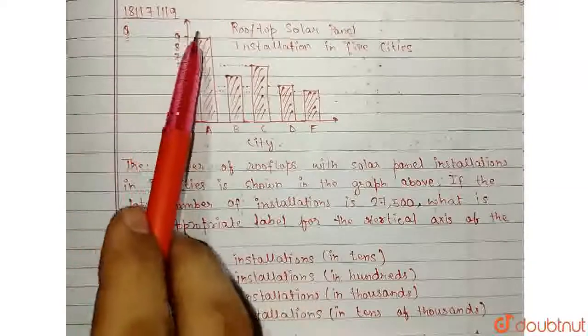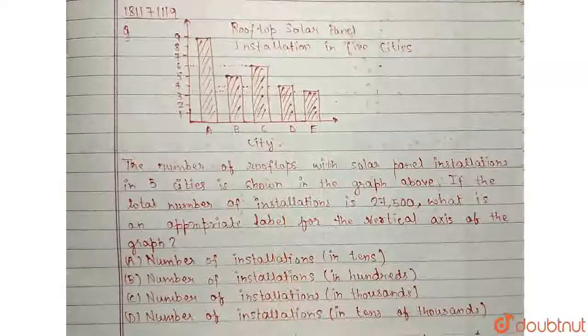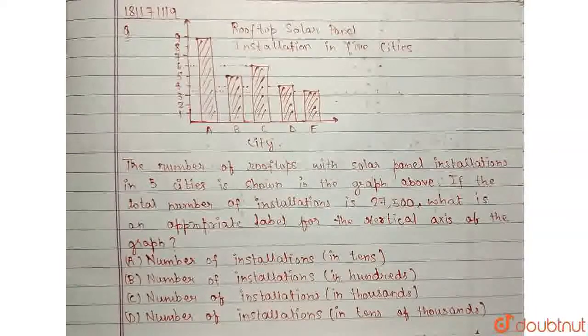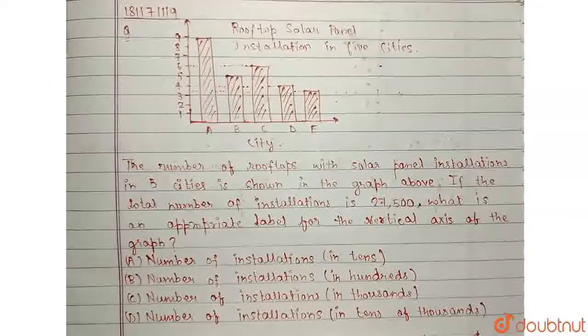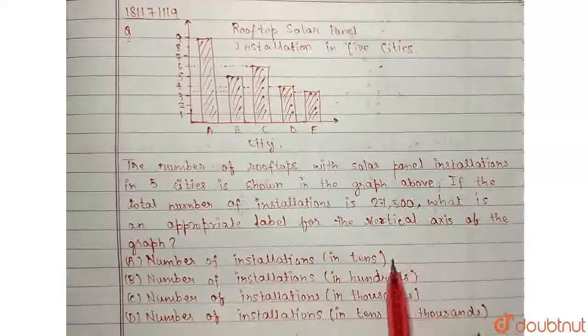So, if I add the peak of each of these bars, I will get the total number of installations in 5 cities, and from that, I can equate it with 27,500 and get the multiplication factor.